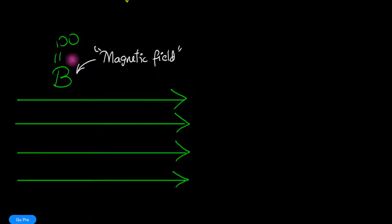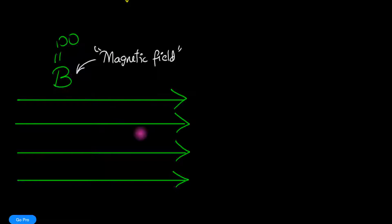We have no idea what the units are, so that number 100 doesn't mean anything as of now — but by the end of this video, hopefully it should mean something. So imagine we have a uniform magnetic field; our goal is to find out what that even means.